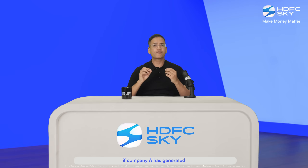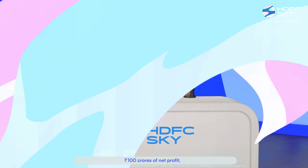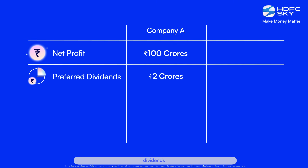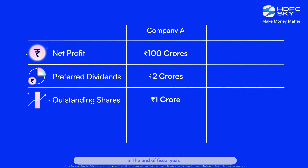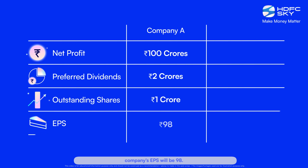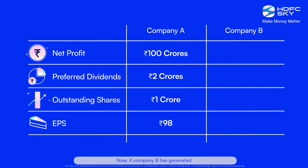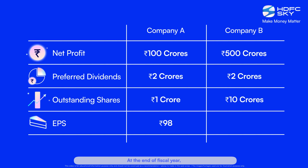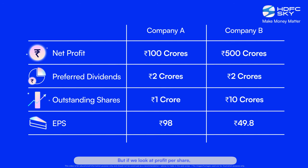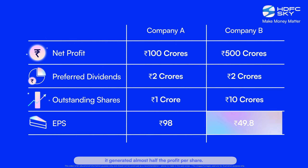Now coming back to our examples: if company A has generated 100 crores of net profit, distributed 2 crores of preferred dividends and had 10 crores of outstanding shares at the end of the fiscal year, the company's EPS will be 9.8. If company B has generated 500 crores of net profit, distributed 2 crores of preferred dividends and had 100 crores of outstanding shares at the end of the fiscal year, company B's EPS will be 500 crores minus 2 crores divided by 10 crores, equals 49.8. So although company B generated five times more profits, if we look at profit per share, it generated almost half the profit per share than company A.